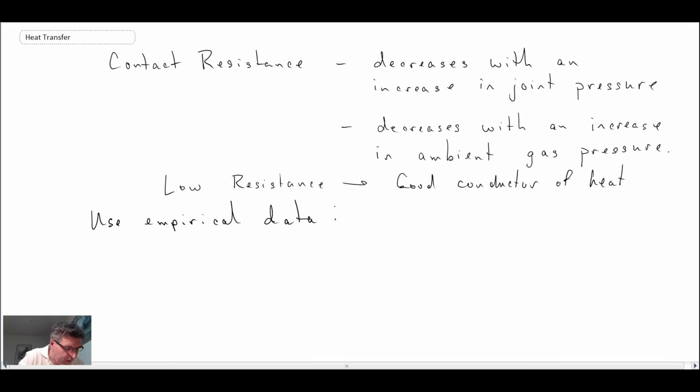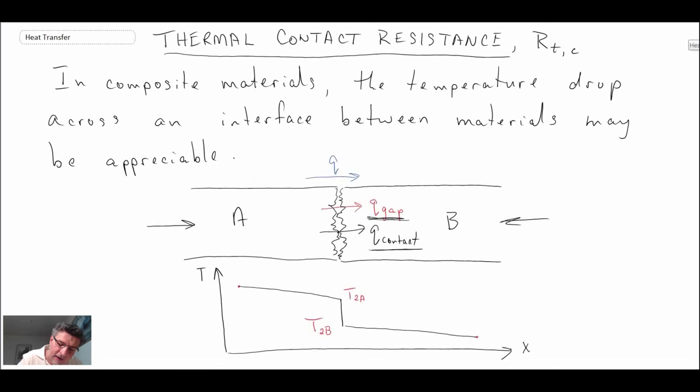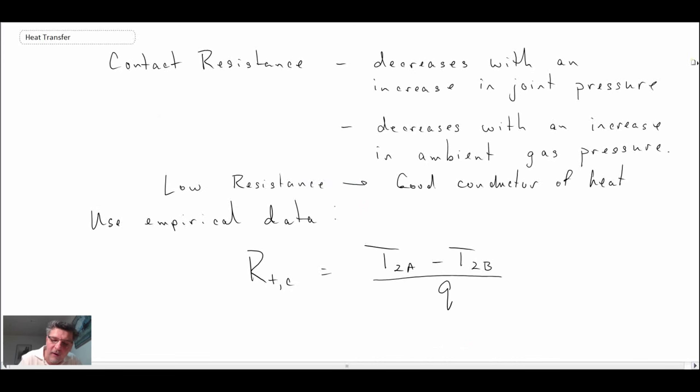And that is how we quantify it. And then the contact resistance itself is going to be T2A minus T2B divided by whatever the heat flux is going to be through that system. So looking back at our schematic, T2A was the temperature before the gap, T2B is the temperature after, and Q is the total heat transfer going across that gap.